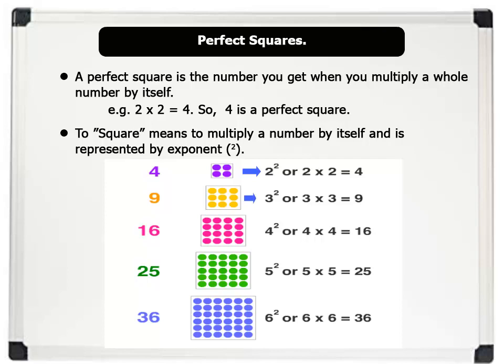3 squared equals 9. 4 squared equals 16. 5 squared equals 25. And 6 squared equals 36.